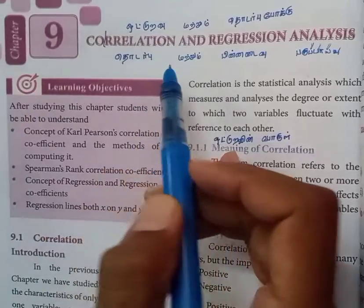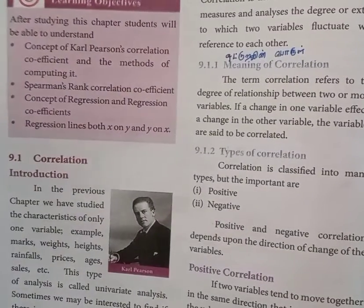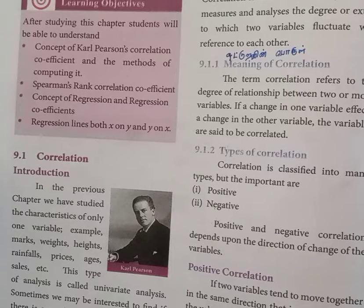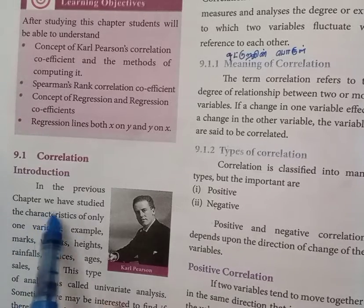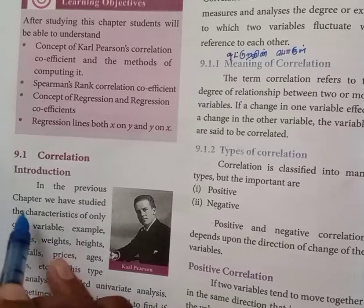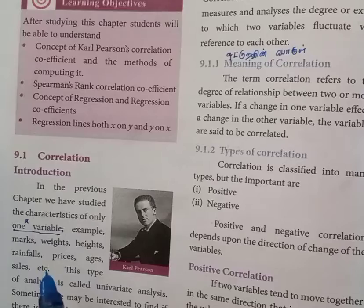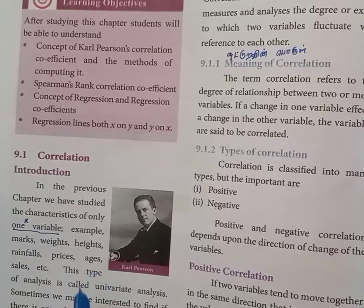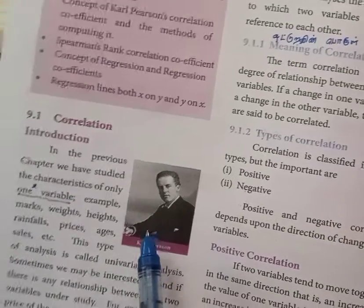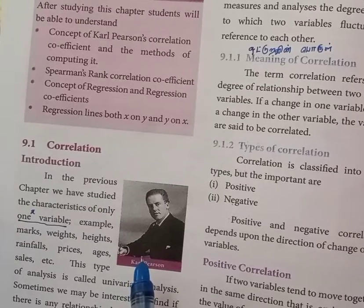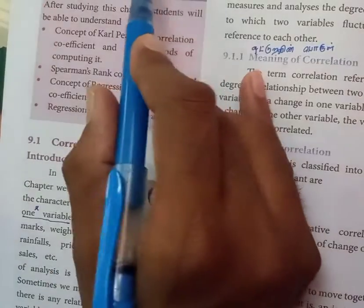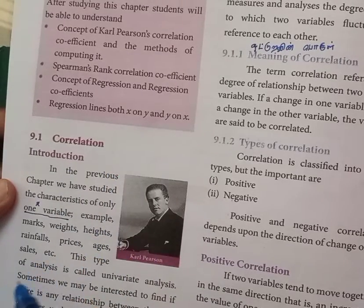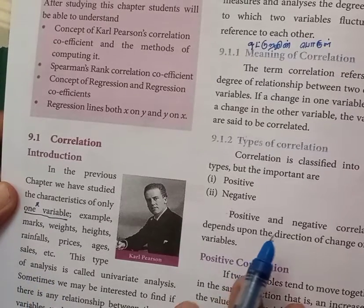Now we see what is meant by correlation. In previous chapters, we studied only one variable — for example, mean, median, mode, standard deviation, mean deviation. We studied the characteristics of only one variable, such as marks, students' weight, heights, rainfall, prices, quantity, age. In statistics, measures of dispersion and central tendency use only one variable. But correlation means we have a comparison of two variables — that is called correlation.